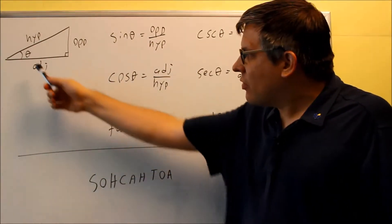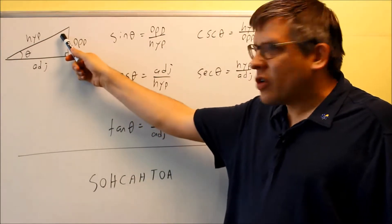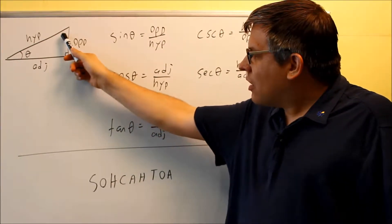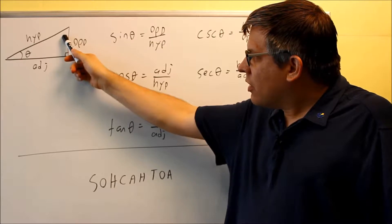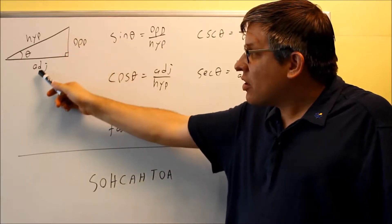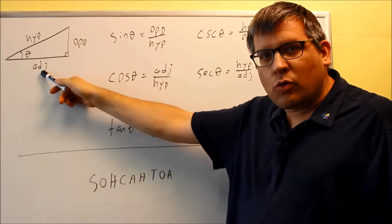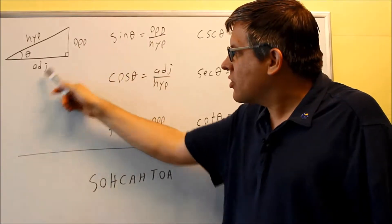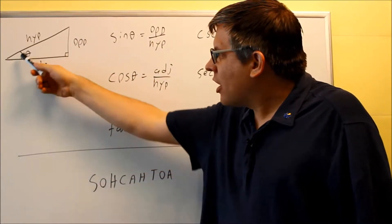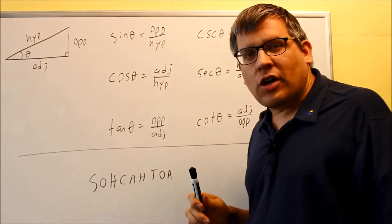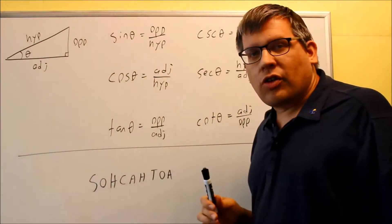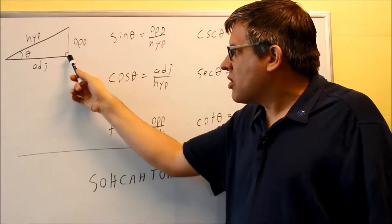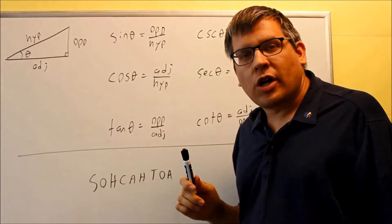Suppose instead of theta being in one position, our theta was up at the top instead. In that case, the side opposite that angle would switch, so opposite and adjacent can actually switch depending on where your theta is. They rely on where theta is. The hypotenuse, no matter what, will always be the side opposite the right angle.